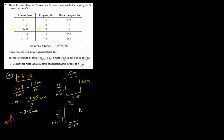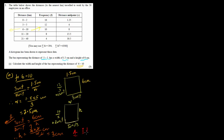For the height of the 6 to 10 bar: the frequency is 10, so frequency density = 10 ÷ 5 = 2 units. Using proportion, if 4 units = 6 cm, then height = (6 × 2) ÷ 4 = 3 cm. So the answer is the bar is 2.5 cm wide and 3 cm high.